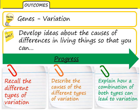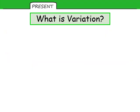As I mentioned, today in one of our last lessons for genes we will be looking at variation, which is the scientific name for differences. We need to be able to recall the different types of variation, describe the causes of them, and explain how for a lot of features the variation shown within humans and other species is caused by a combination of different factors. So what is variation?